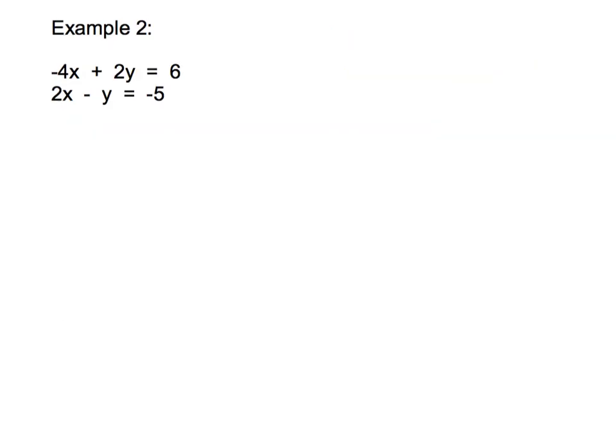Please write example 2 into your notes, and our first step is to isolate one variable. When I look at these two equations, the second equation, the y term, does not have a coefficient. There's no number hanging out in front of it. That means it's going to be easy to solve for y, so that's what I'll do first. I'm going to rewrite that equation as 2x plus negative 1y is equal to negative 5. And now I'll start doing some inverse operations to get y by itself.